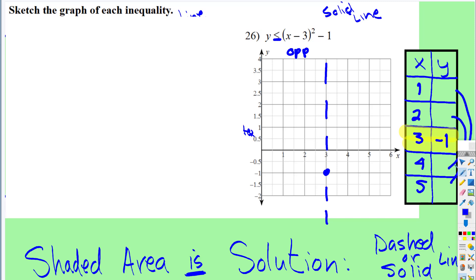So if we put 1 in here: 1 subtract 3 squared, subtract 1. 1 subtract 3 is negative 2, negative 2 squared is positive 4, 4 subtract 1 is 3. So at 1, I'm up here at 3, and at 5, I'm up here at 3.